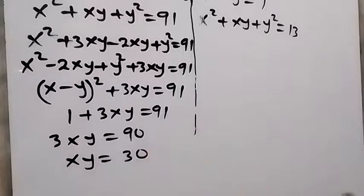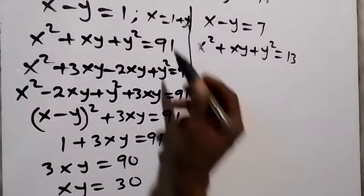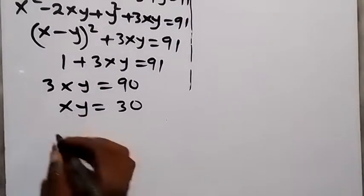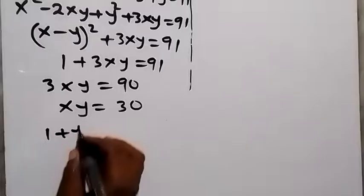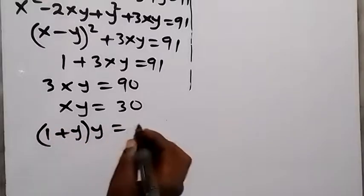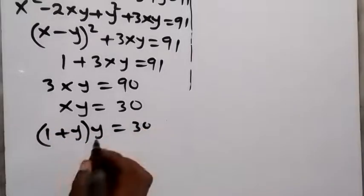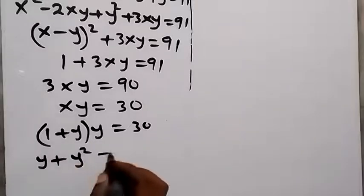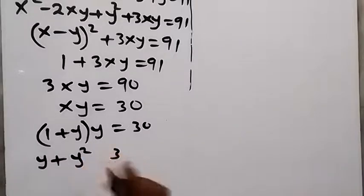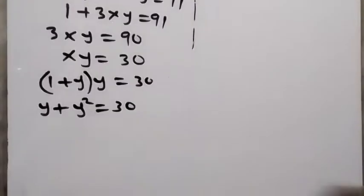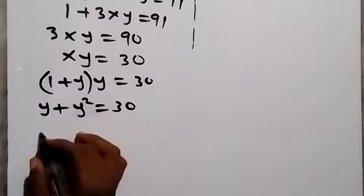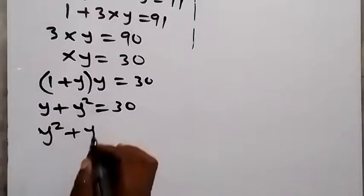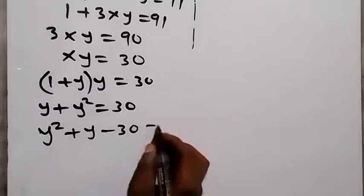Since x equals 1 plus y, we substitute to get 1 plus y multiplied by y equals 30. Expanding: y plus y squared equals 30. Rearranging and bringing 30 to this side, we have y squared plus y minus 30 equals 0.